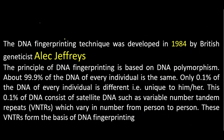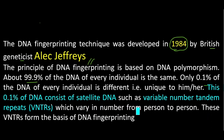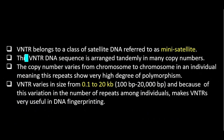To summarize: DNA fingerprinting was developed by Alec Jeffreys, a British geneticist, in 1984. According to the HGP, 99.9% of DNA is the same in every individual, and only 0.1% is different — which is very unique to that person. This 0.1% consists of satellite DNA such as VNTRs, which vary in number from person to person.